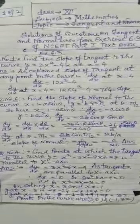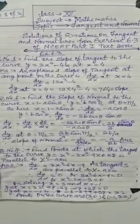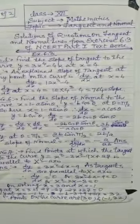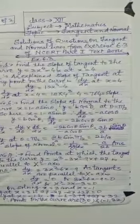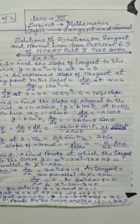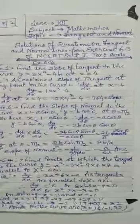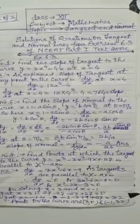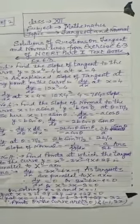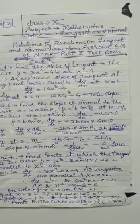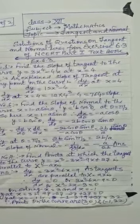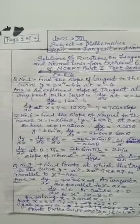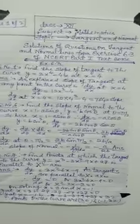Exercise 6.3 is based on tangent and normal lines. The first question: find the slope of the tangent to the curve y = 3x⁴ − 4x at x = 4. The slope of the tangent at any point is dy/dx at that point. Differentiating the equation of curve gives 12x³ − 4, and putting x = 4 gives 764, which is the slope of the tangent at x = 4.